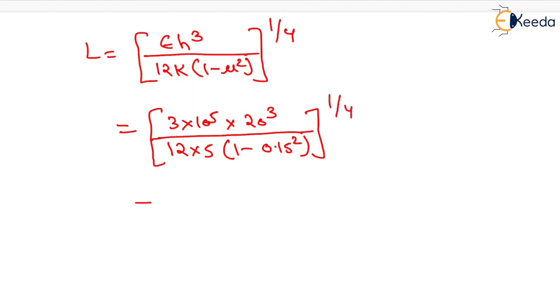After solving this, we will have the value of radius of relative stiffness equals to 79.98 cm, which will be nearly equals to 80 cm. That is all about this numerical. Thank you very much, students.